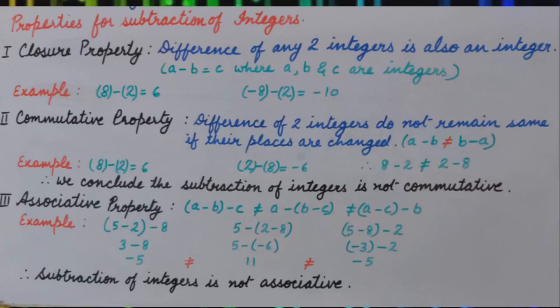If we change the group, that is if we subtract 2 minus 8 first, then we get 5 minus minus 6. And solving it, we get 11. We can see the answers are not same.